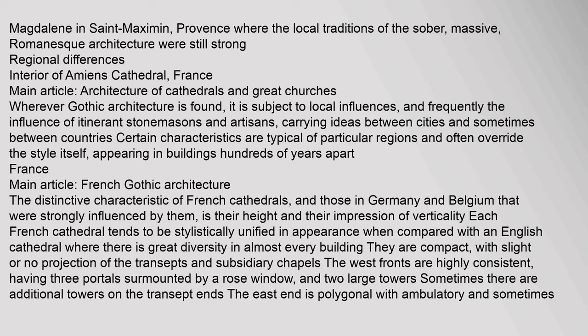Wherever Gothic architecture is found, it is subject to local influences, and frequently the influence of itinerant stonemasons and artisans carrying ideas between cities and sometimes between countries. The distinctive characteristic of French cathedrals, and those in Germany and Belgium that were strongly influenced by them, is their height and their impression of verticality. Each French cathedral tends to be stylistically unified in appearance. In almost every building they are compact, with slight or no projection of the transepts and subsidiary chapels. The west fronts are highly consistent, having three portals surmounted by a rose window and two large towers. The east end is polygonal with ambulatory and sometimes a chevet of radiating chapels.